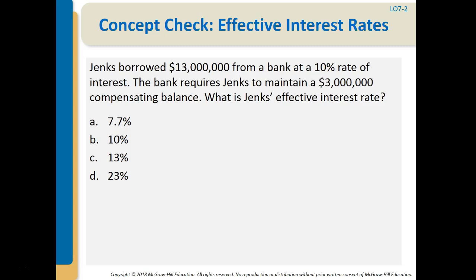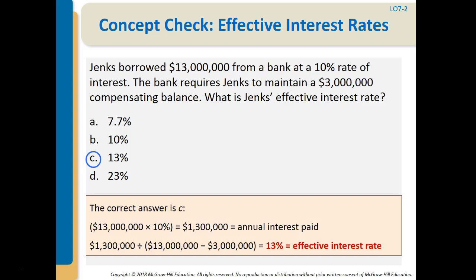Question: Jenks borrows $13 million from a bank at 10% interest. The bank requires Jenks to maintain a $3 million compensating balance. What is Jenks' effective interest rate? The $13 million × 10% = $1,300,000 paid annually. Dividing by the true amount borrowed of $10 million gives an effective interest rate of 13%.